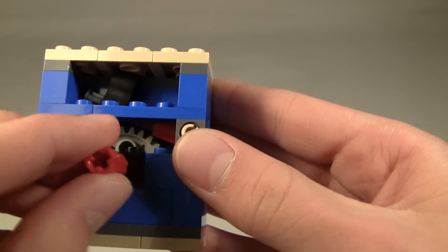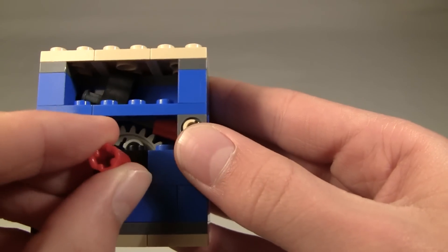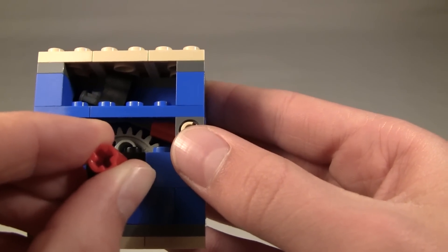So what happens is when you twist it this way, you can see that the gears are able to slip past that red piece.